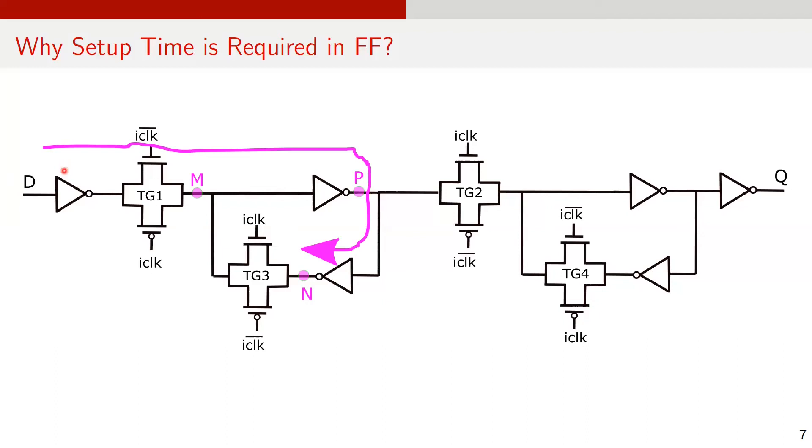However, if D arrives late and reaches only after the first inverter before TG1 is off, the new data hasn't even arrived inside the master latch and it is lost.